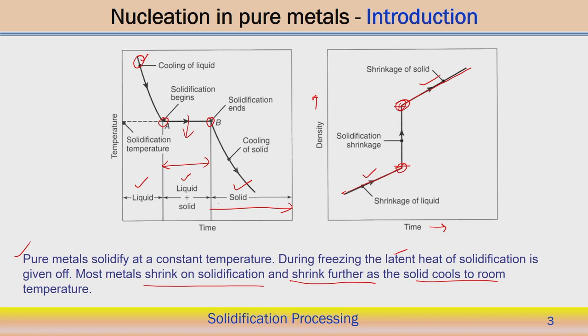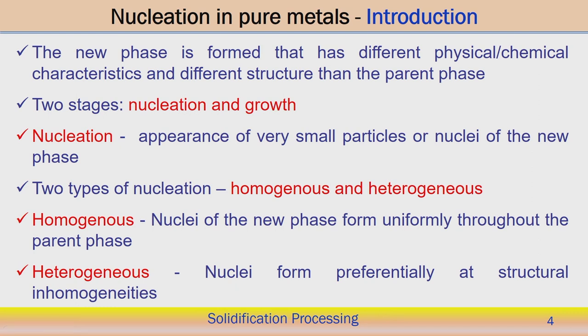These two diagrams are very important to start understanding the solidification process. Solidification consists of two stages: nucleation, where a very new phase — a new solid phase — appears within the liquid, and then growth, where the solid phase gradually grows until all the liquid phase is transformed to solid phase within a particular container.